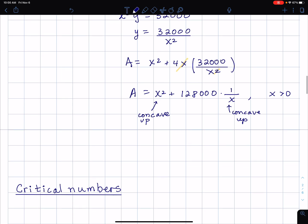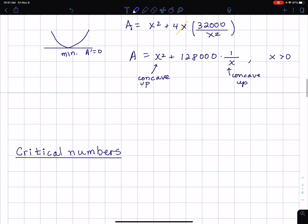So I'm summing two concave up functions. That's going to give a concave up function. So what I'm getting here is a concave up function, and the critical number where the derivative equals zero will be a minimum. So let's go ahead and find the critical numbers.